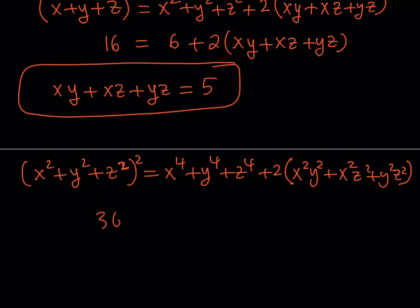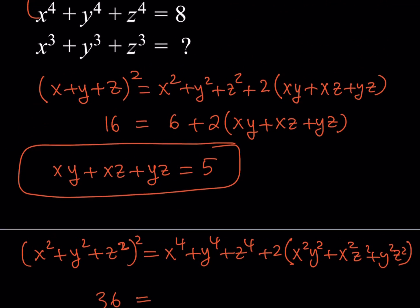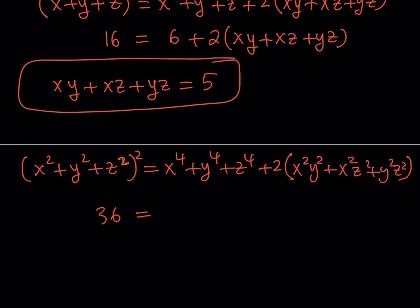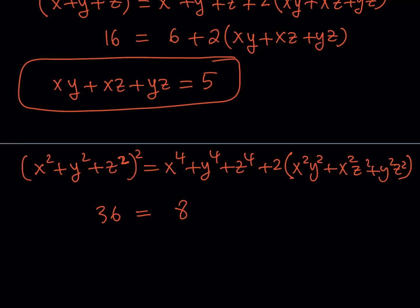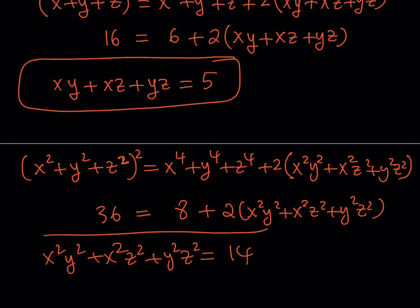So 6 squared is going to be 36. Do we know x to the fourth plus y to the fourth plus z to the fourth? Yes we do. That's going to be 8. And then we have everything we need to find this. What we can do is we can isolate this expression which is x squared y squared plus x squared z squared plus y squared z squared. If you subtract 36 minus 8, that's 28 divided by 2, you're going to get 14. This is another useful expression for us.